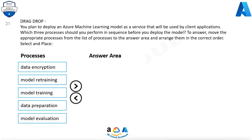Question 21. Drag drop. You plan to deploy an Azure Machine Learning model as a service that will be used by client applications. Which three processes should you perform in sequence before you deploy the model? To answer, move the appropriate processes from the list of processes to the answer area and arrange them in the correct order. Select and place.